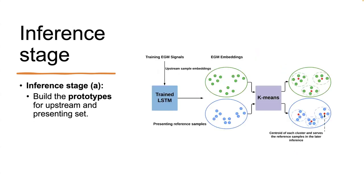Now we introduce the inference stage. In the inference stage, we first process the EGM signals in two steps. In the first step, we apply the k-means method to the training embeddings to develop prototypes for both upstream and presenting categories. These prototypes form the basis of our support sets in the few-shot learning in the next step.